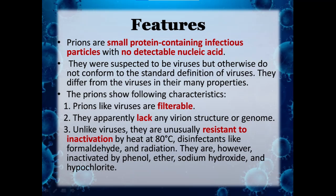Prions are small protein-containing infectious particles with no detectable nucleic acid. They were suspected to be viruses but did not conform to the standard definition of viruses, and they differ from viruses in many properties. Prions like viruses are filterable, but they apparently lack any virion structure or genome. Unlike viruses, they are unusually resistant to inactivation by heat at 80°C, and disinfectants like formaldehyde and radiation can inactivate them. However, they are inactivated by phenol, ether, sodium hydroxide, and hypochlorite.